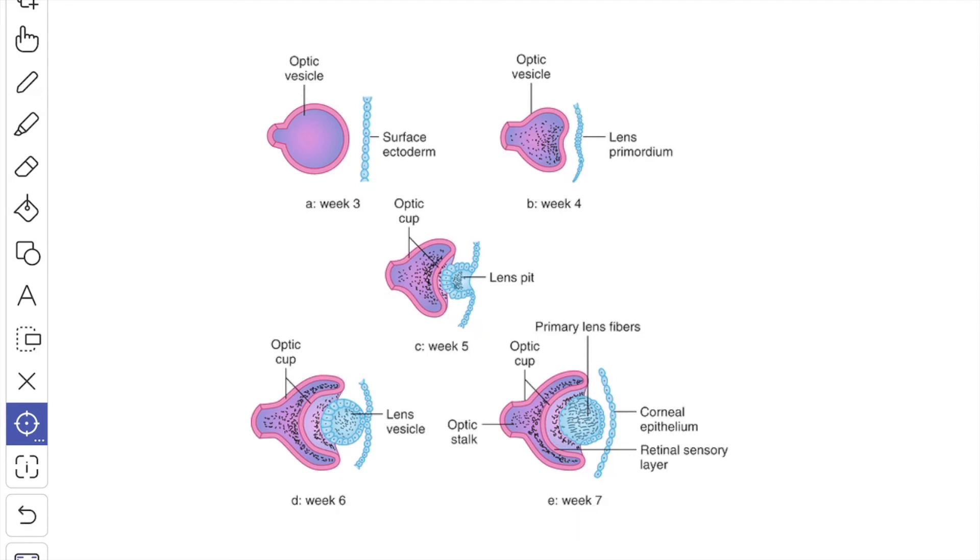However, the cells of the anterior wall of the vesicle remain intact, they proliferate and migrate to the equator of the lens where they elongate and differentiate into secondary lens fibers.